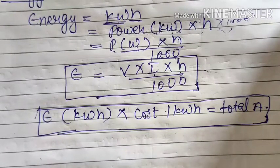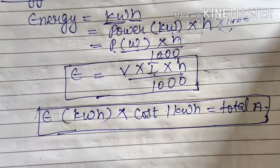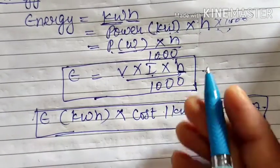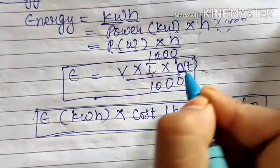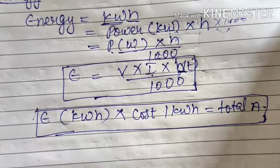To summarize: power should be in kilowatt for the bill calculation. If it is not in kilowatt, divide by 1000. If power is not given, use voltage and current. Time must be in hours. Then multiply energy in kilowatt hours by the cost of 1 kilowatt hour to get the total electricity bill amount.